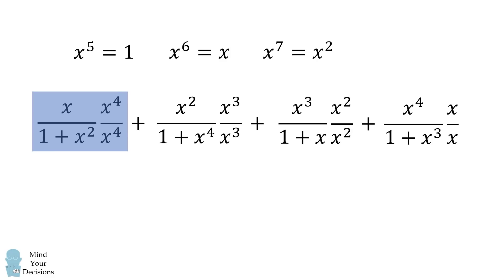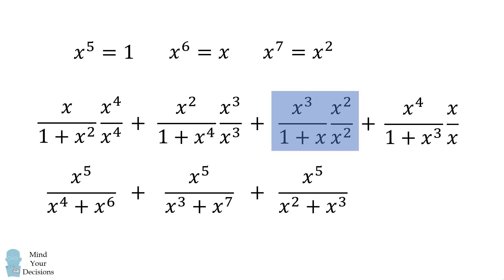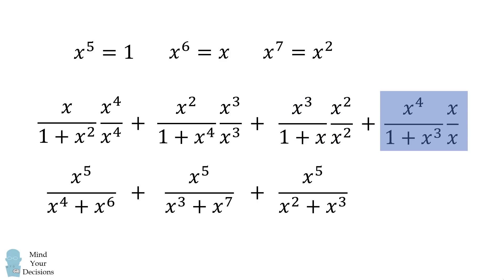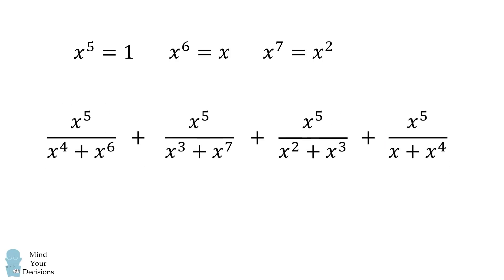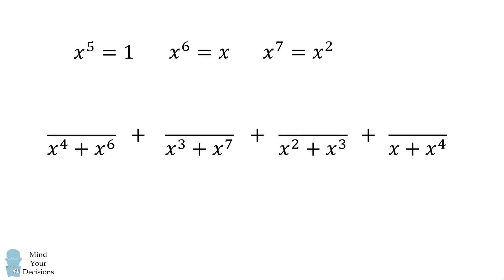We'll simplify each of these fractions. The first fraction becomes x to the power of 5 divided by x to the power of 4 plus x to the power of 6. The second fraction becomes x to the power of 5 divided by x cubed plus x to the power of 7. The third fraction becomes x to the power of 5 divided by x squared plus x cubed, and the last fraction is x to the power of 5 divided by x plus x to the power of 4. Since x to the power of 5 equals 1, all of the numerators become 1.